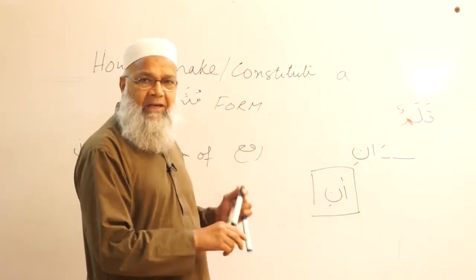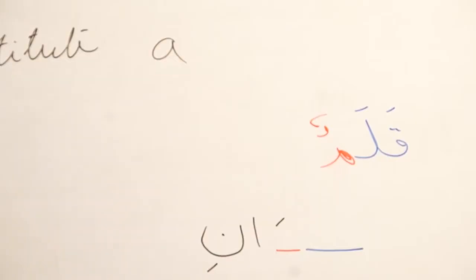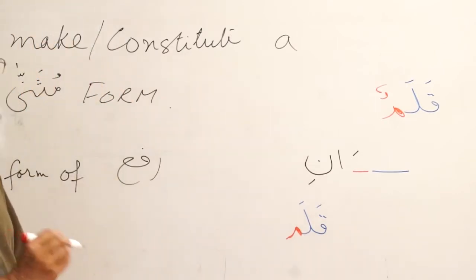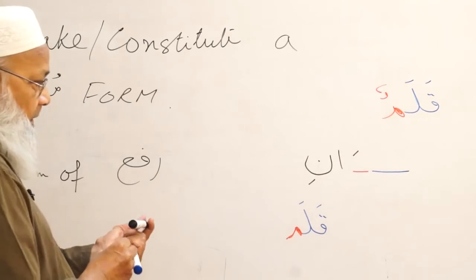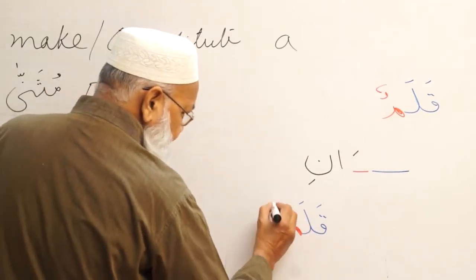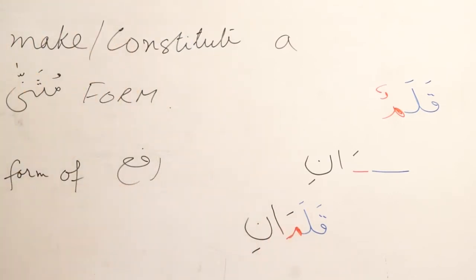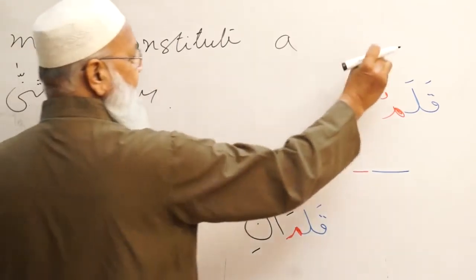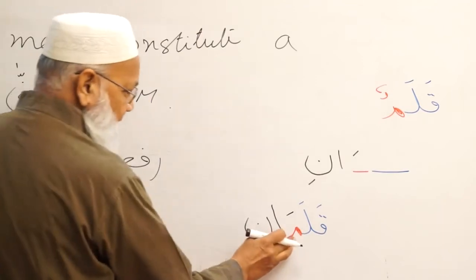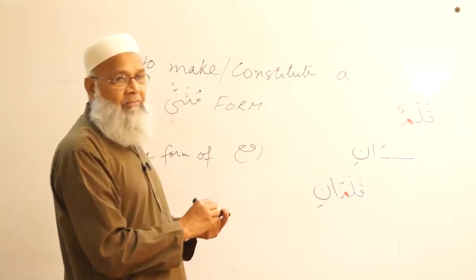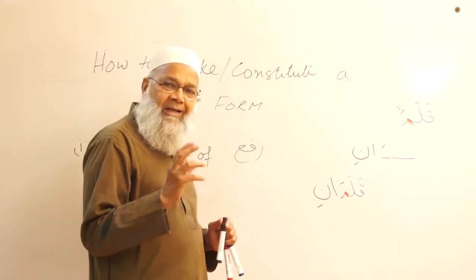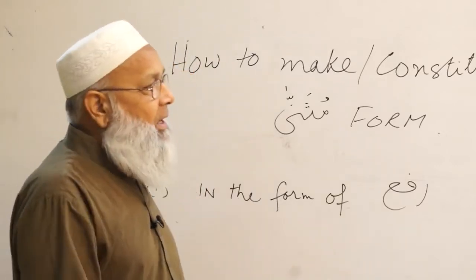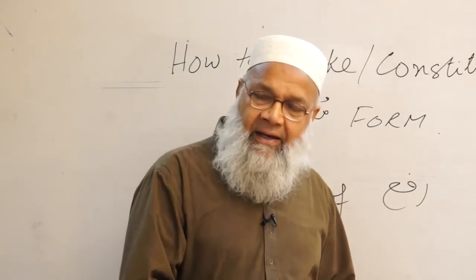The musanna of qalamun — the meem will remain unchanged but its harkat will change. So qalamun, a pen in the singular rafa form, becomes qalamani — two pens in the rafa form. From the very beginning you should learn to think of every Arabic noun with its arab: qalamun is a pen in rafa form, and qalamani are two pens in rafa form.